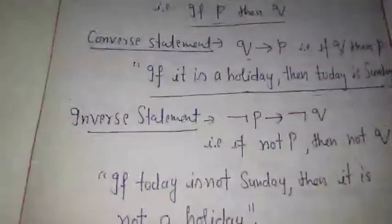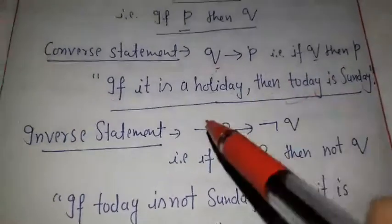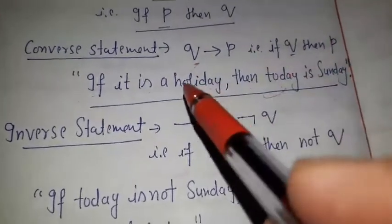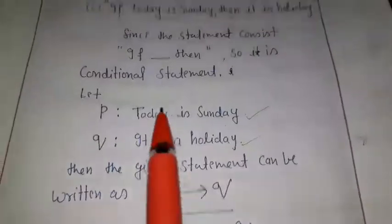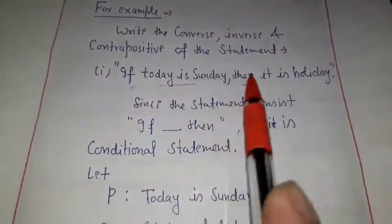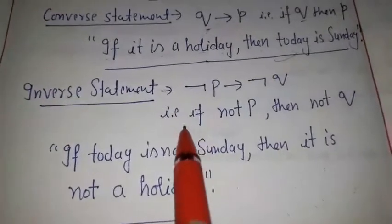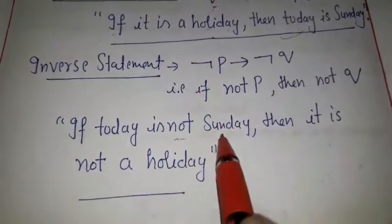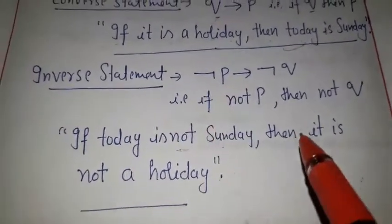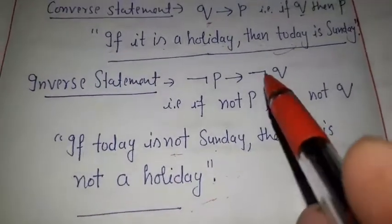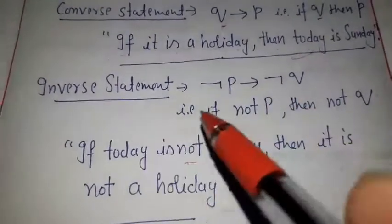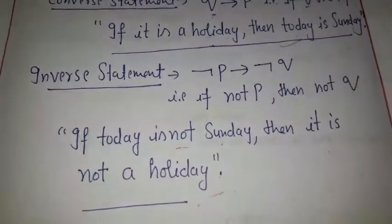Similarly, the inverse of P implies Q is not P implies not Q, that is 'if not P then not Q'. We negate both atomic propositions. Not P means 'today is not Sunday' and not Q means 'it is not a holiday'. So the inverse is: 'if today is not Sunday then it is not a holiday.' This is the inverse of P implies Q.